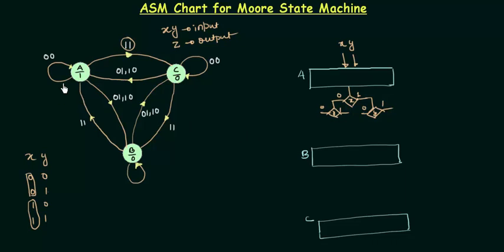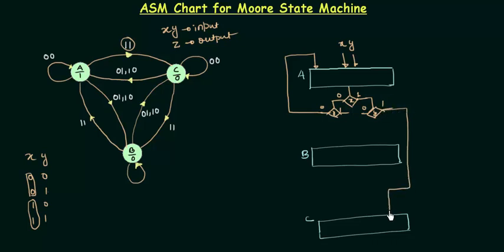When we have input 00 we are going to remain on state A, so we will connect that path back to A. When the input is 11 we will transit to C, so when input is 11 I will go to C. And when the input is 01 or 10 we are going to be at B, so I will join those two paths and go to B. We are done with state A.